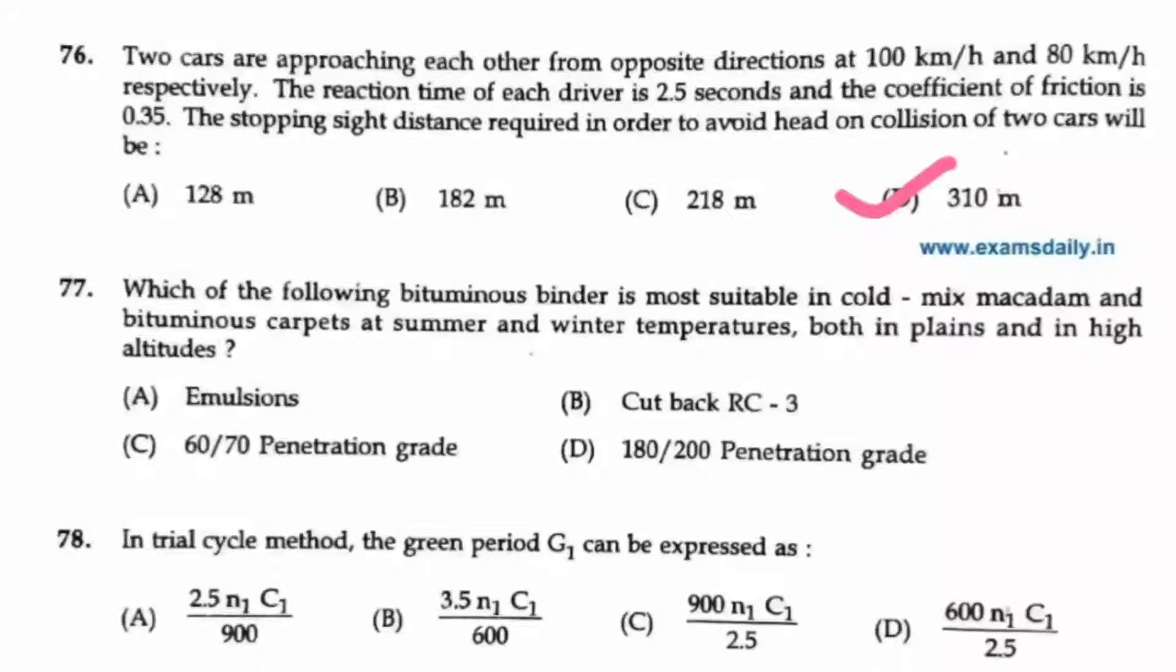Question number 77. Which of the following bituminous binder is most suitable in cold mix macadam and bituminous carpets at summer and winter temperatures both in plains and in high altitudes? So for this, cutback RC3 is the answer, option B.